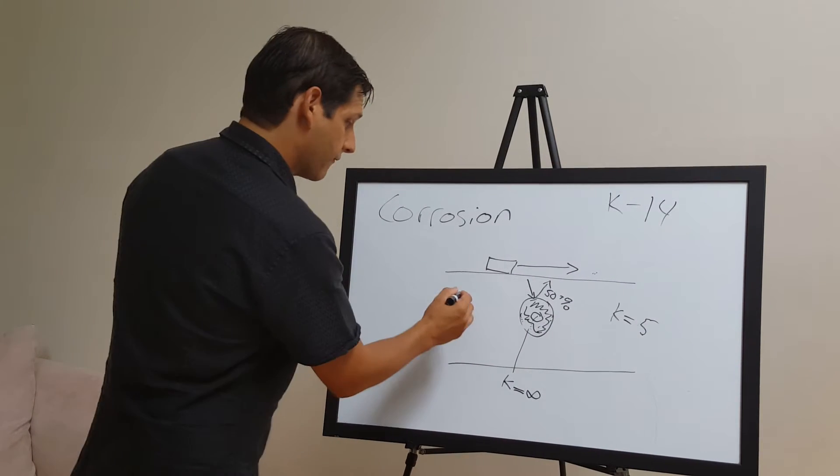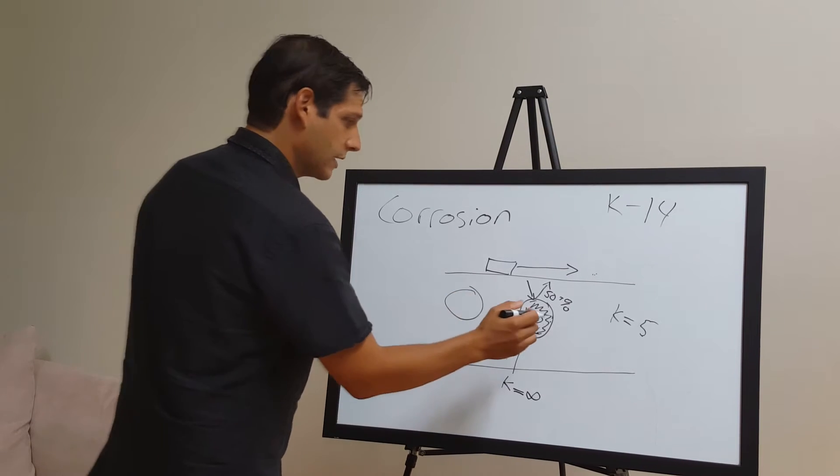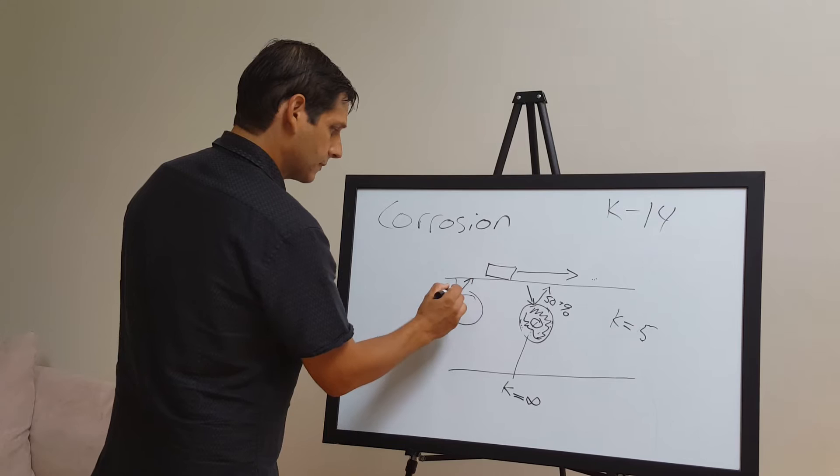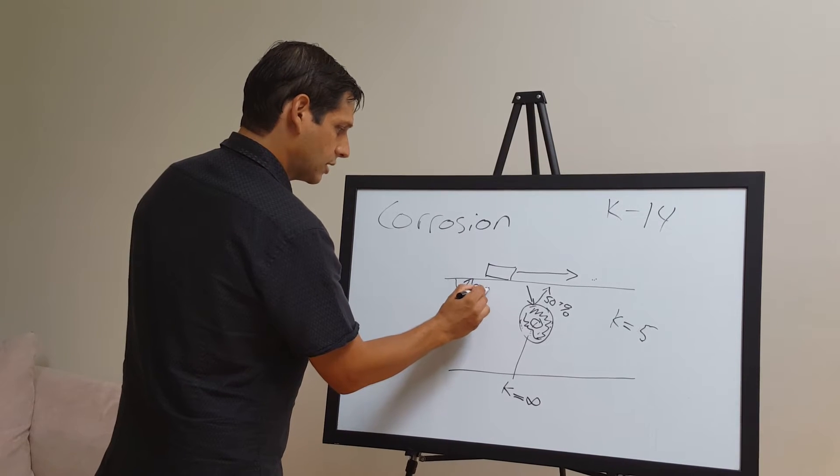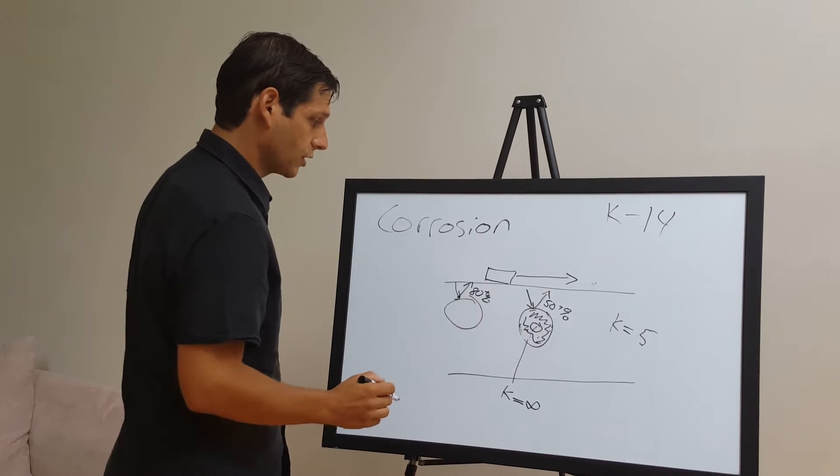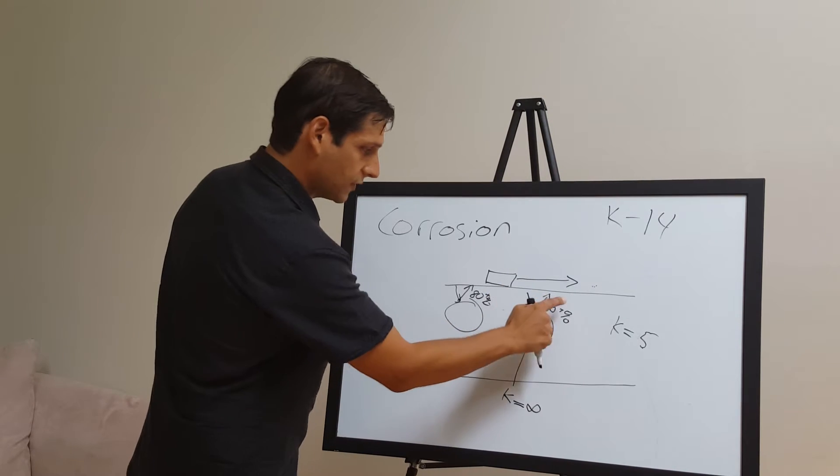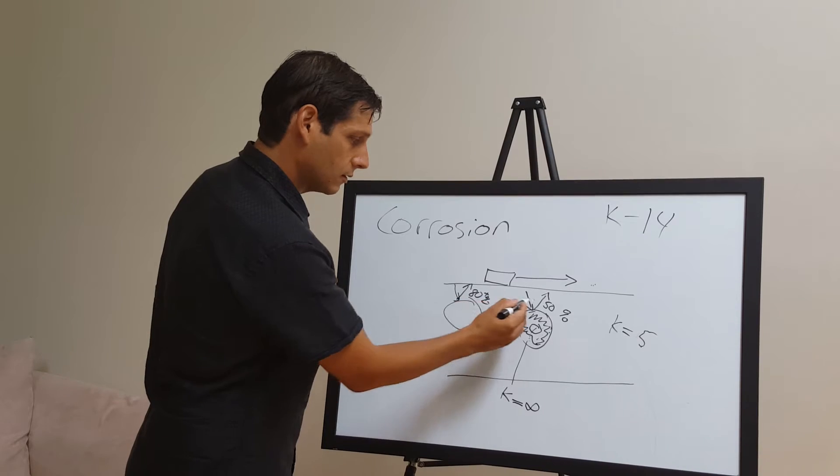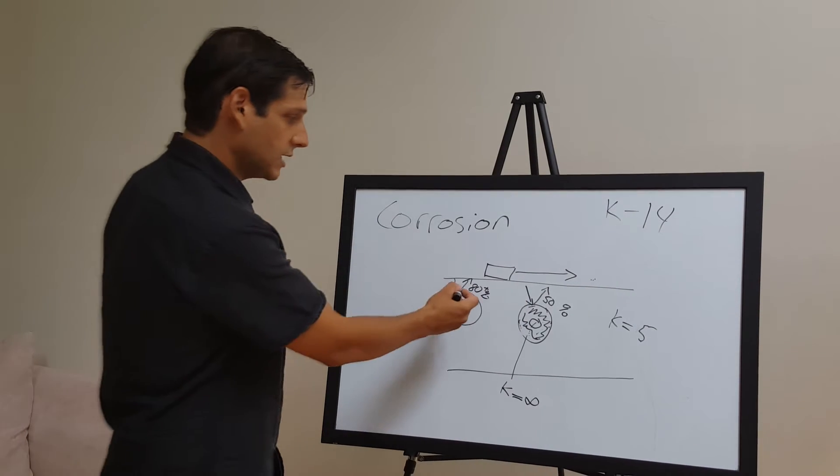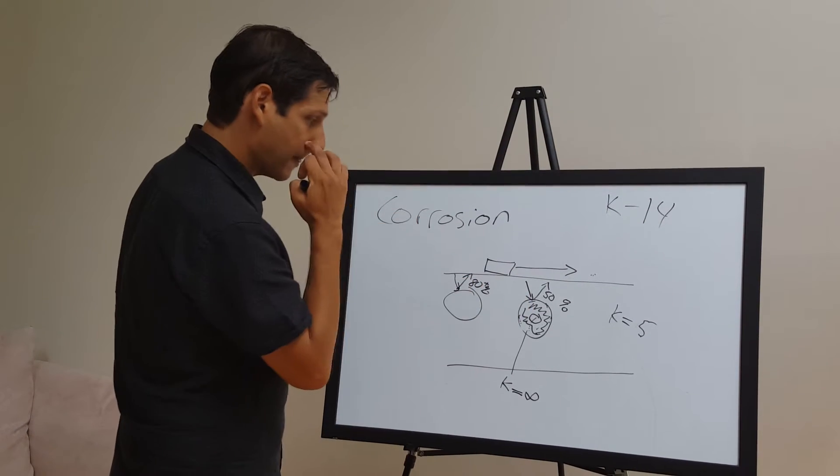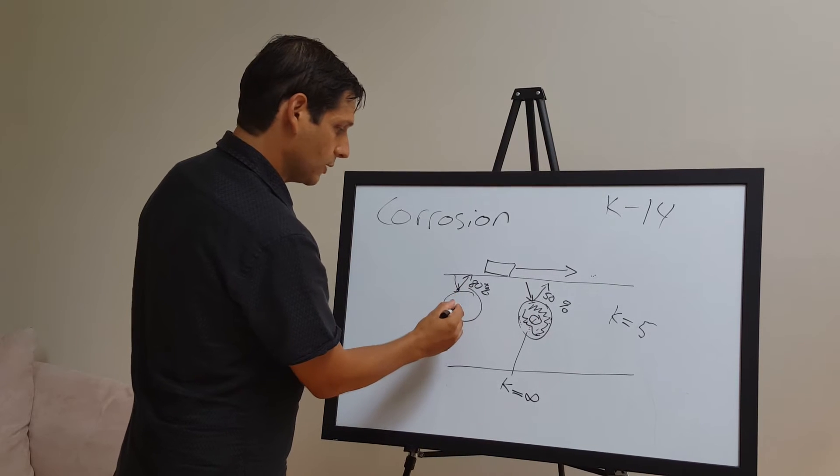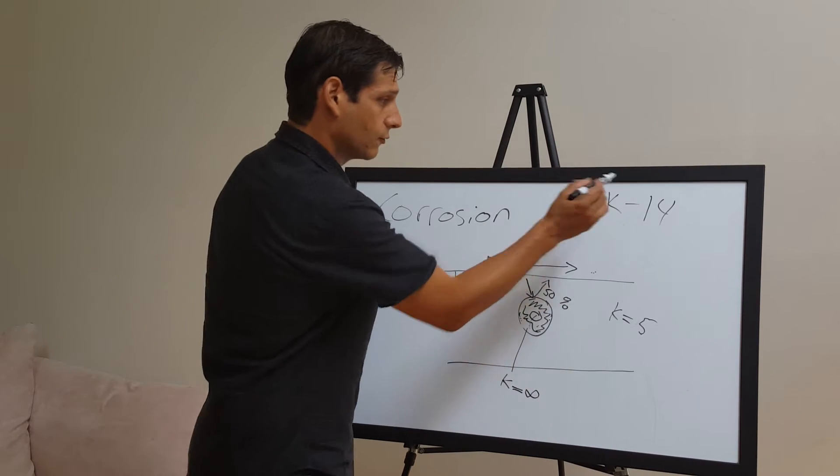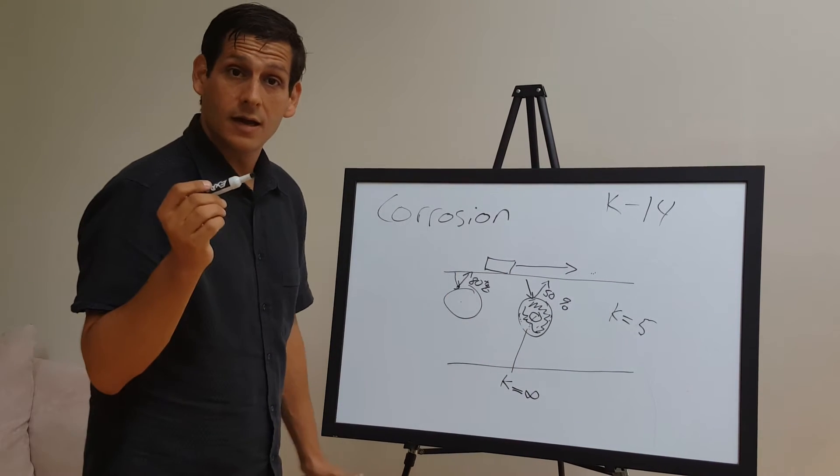If you have, for example, uncorroded rebar here and you're getting 80 plus percent of the signal returning versus 50 or lower percent returning, you should be able to understand that difference. The GPR should be able to record that variation between non-corroded versus corroded rebar, and this is the main reason why that is the case.